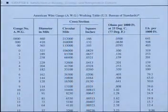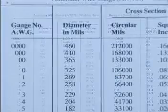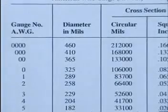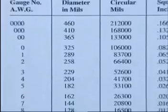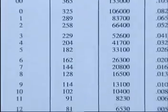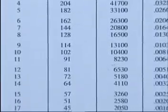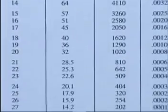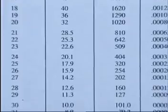In the United States, standard wire sizes are defined by the American Wire Gauge, which lists conductors of various sizes. In the HVAC industry, wire sizes ranging from 20 to 4-0 are common.